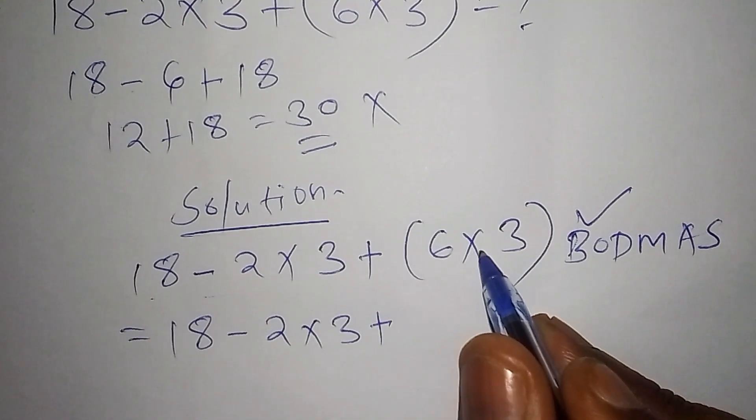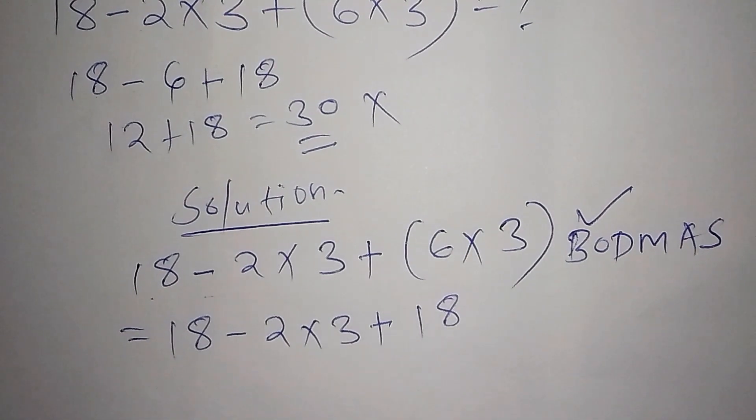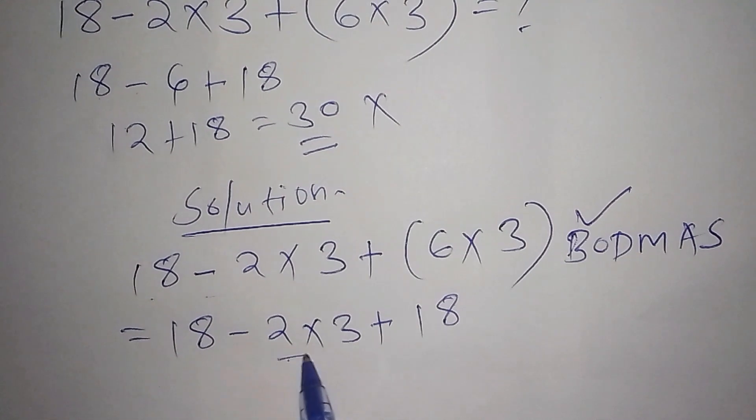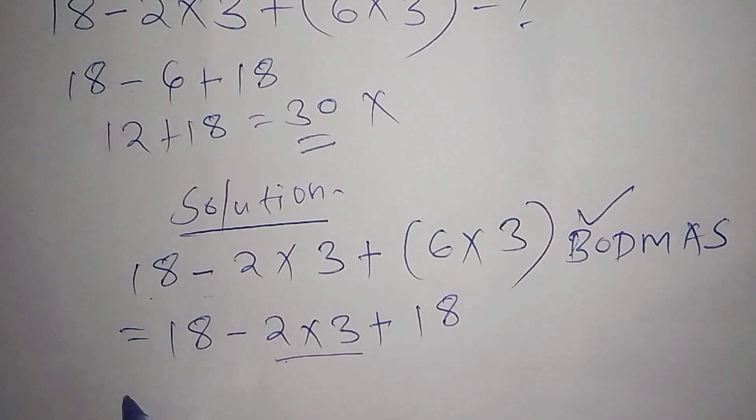After I've arrived at that step, I shall move to the multiplication sign, whereby I'm supposed to work out 2 multiply by 3. So here we shall have 18.